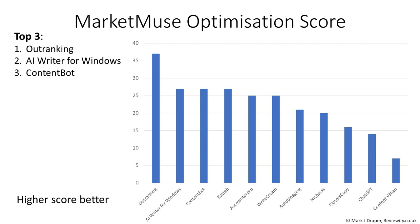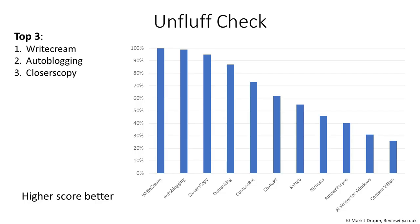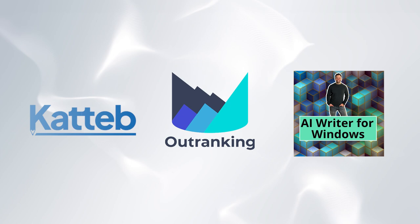I've not used ContentBot for too much long-form content, but it is excellent at short form. Finally I decided to run each article through the Unfluff checker — you paste your article in and it tells you how much fluff is included; a lower number is worse and a higher number is better. Interestingly, this tipped things around quite a bit. We see three completely new entries in the top three, and some previous high hitters such as AI Writer for Windows didn't perform that great. Outranking drops to fourth in that particular test, but overall it's a very strong performance from Outranking, Kateb, and AI Writer for Windows, although it was interesting that they didn't do as well in the fluff test.